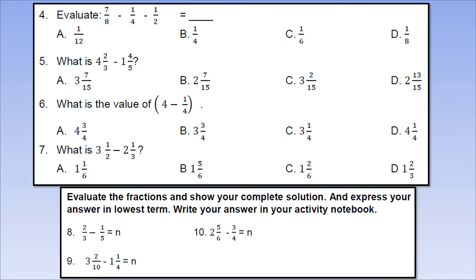Now let us continue with number 4: 7/8 minus 1/4 minus 1/12. A. 1/12, B. 1/4, C. 1/6, or D. 1/8. Number 5: What is 4 and 2/3 minus 1 and 4/5? A. 3 and 7/15, B. 2 and 7/15, C. 3 and 2/15, or D. 2 and 13/15?